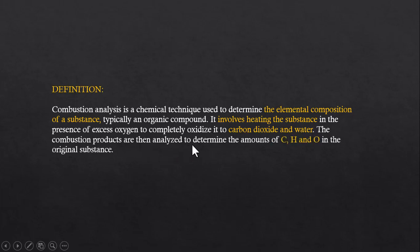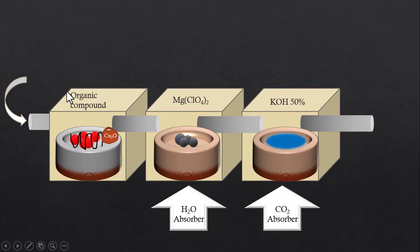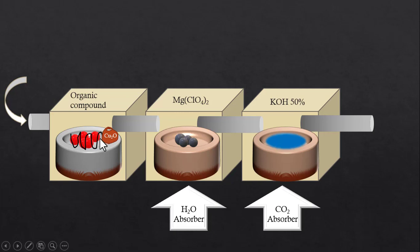This is the experimental setup used for combustion analysis. The first chamber contains the pure organic compound, which is kept in a bowl-shaped boat made of an inert metal — particularly platinum. Copper oxide acts as an oxidizing agent so that the compound burns completely to produce carbon dioxide and water.